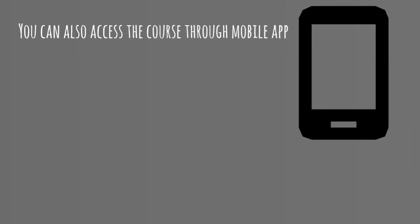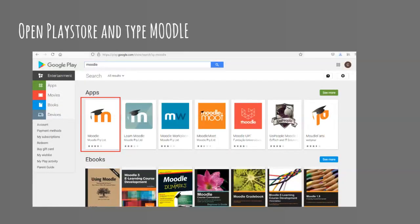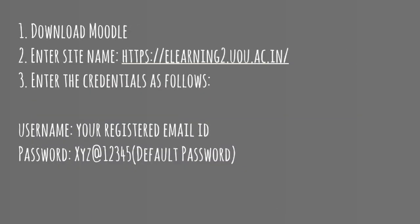You can also access this course through a mobile app. You can download Moodle from your play store and after installing it, it will ask for the site name. You provide the site name as elearning2.uou.ac.in, enter your course credentials, and you will be able to access this course on your smartphone as well.